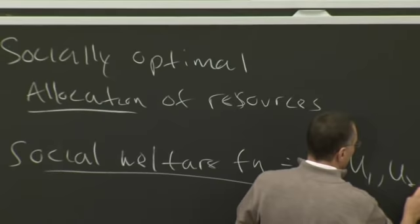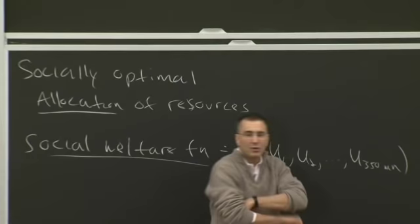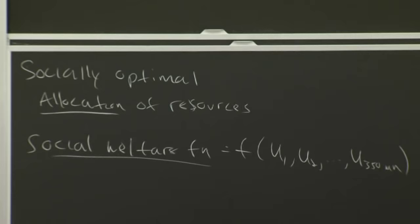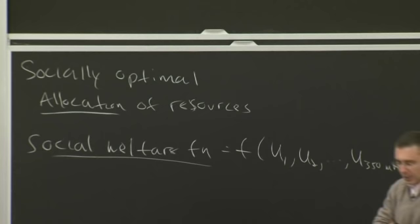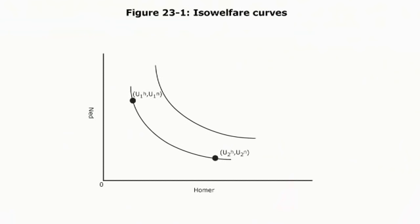A social welfare function is a mathematical representation of how society values different groups. It's some function of the utility of individual one, individual two, all the way to 350 million people. Think about a society with two people, Ned and Homer. Each of these ISO welfare curves represents a social indifference curve — society has a utility function with indifference curves. Society is indifferent between Homer having U1h and Ned having U1n, or Homer having U2h and Ned having U2n.